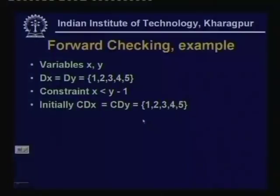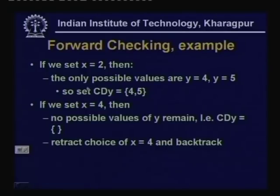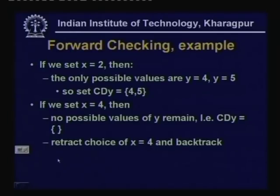Consider a forward checking example: variables x and y with domains {1,2,3,4,5} and constraint x < y - 1. Initially CDx = CDy = {1,2,3,4,5}. If we set x=4, then CDy becomes empty because there is no value y in {1,2,3,4,5} satisfying y > 5. So we must retract x=4 and backtrack.